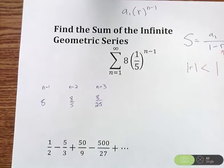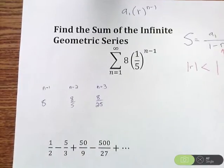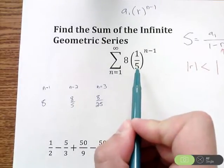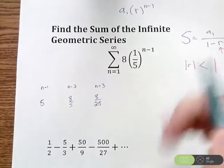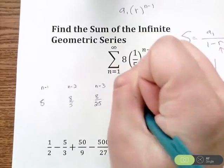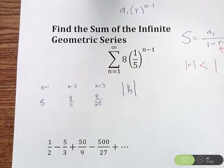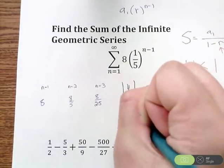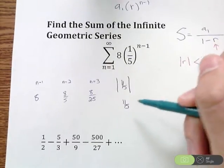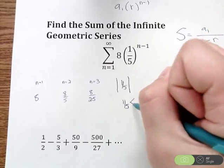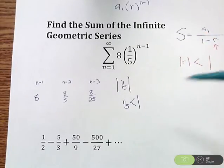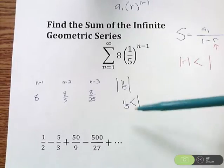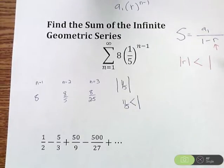So we have these pieces. What we need to recognize is we need to look at R. In this first example, R is 1/5. Let's take the absolute value of 1/5. The absolute value of a positive number is still positive, so we get 1/5. Now 1/5 is less than 1, so that tells us the sum of this infinite geometric series will exist. So what I'm going to do is take all my pieces, plug it in, and use a calculator to find the sum.